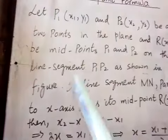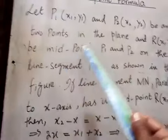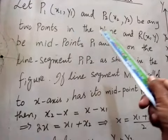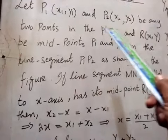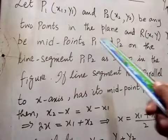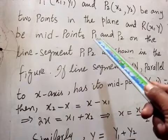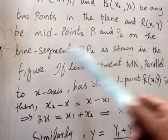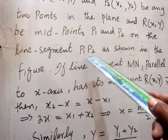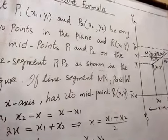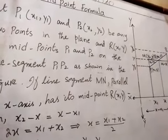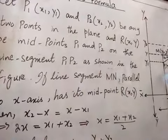R is the midpoint of these two points. As described, P1 and P2 are two points in the plane, and R is the midpoint of P1 and P2 on the line segment P1P2, as shown in this figure.